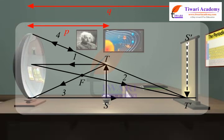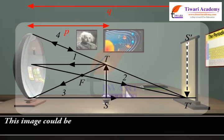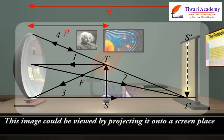As is easily demonstrated, rays emanating from other parts of the object are brought into focus in the vicinity of T1 such that a complete image of the object is produced between S1 and T1. This image could be viewed by projecting it onto a screen placed between points S1 and T1.